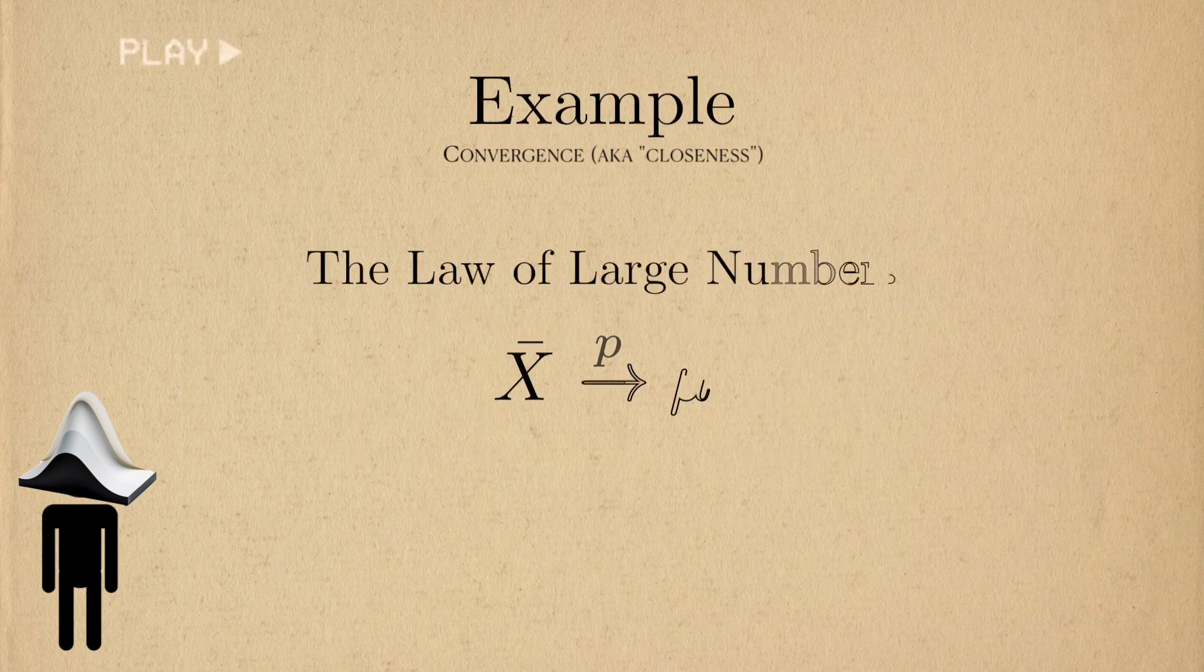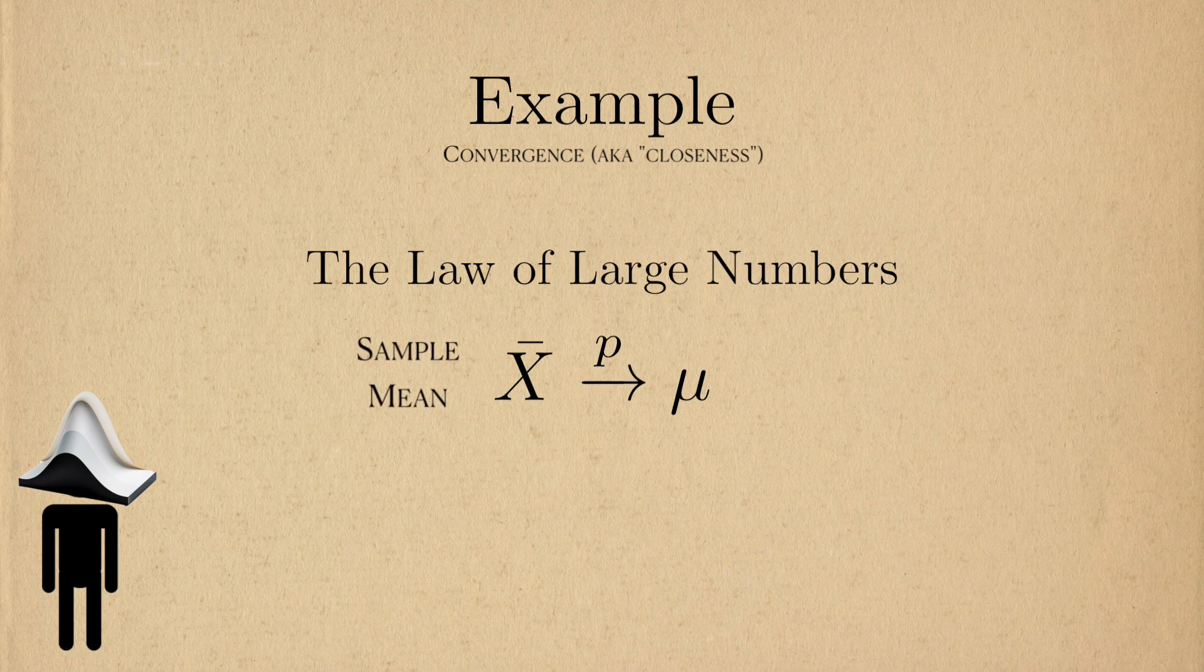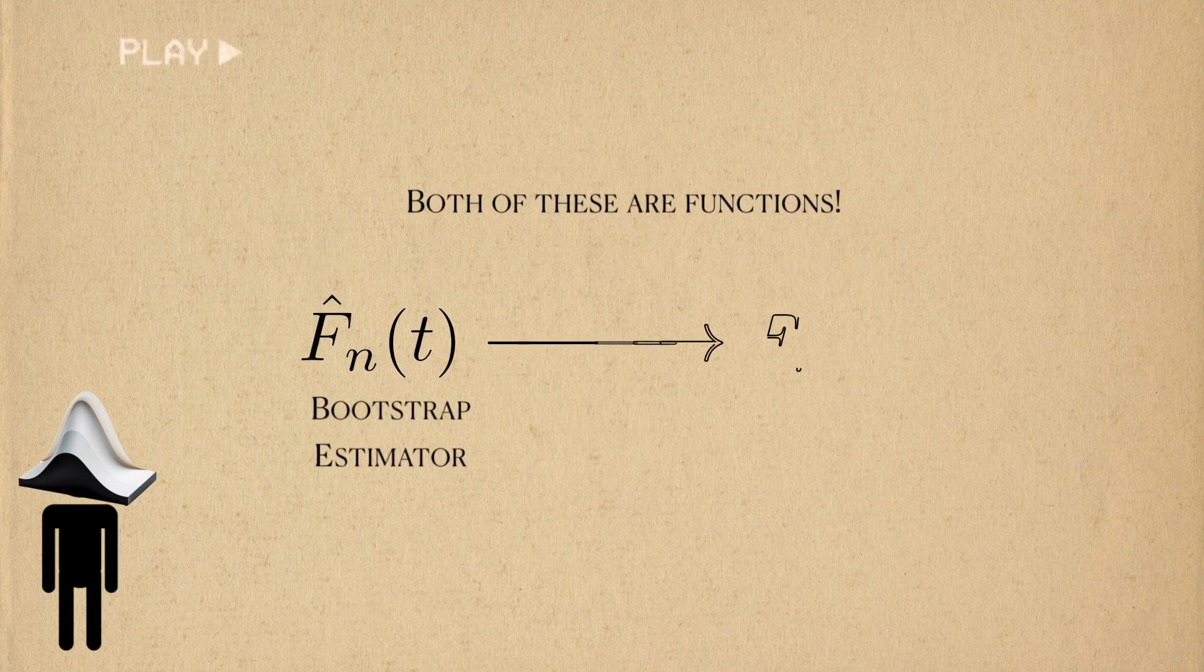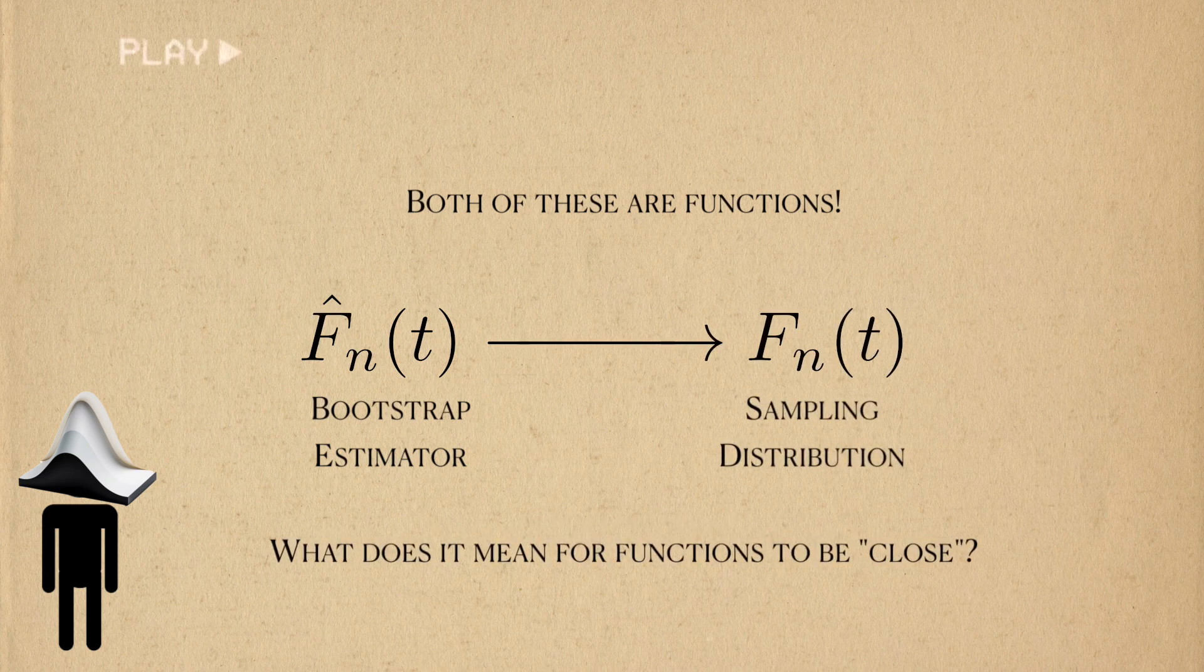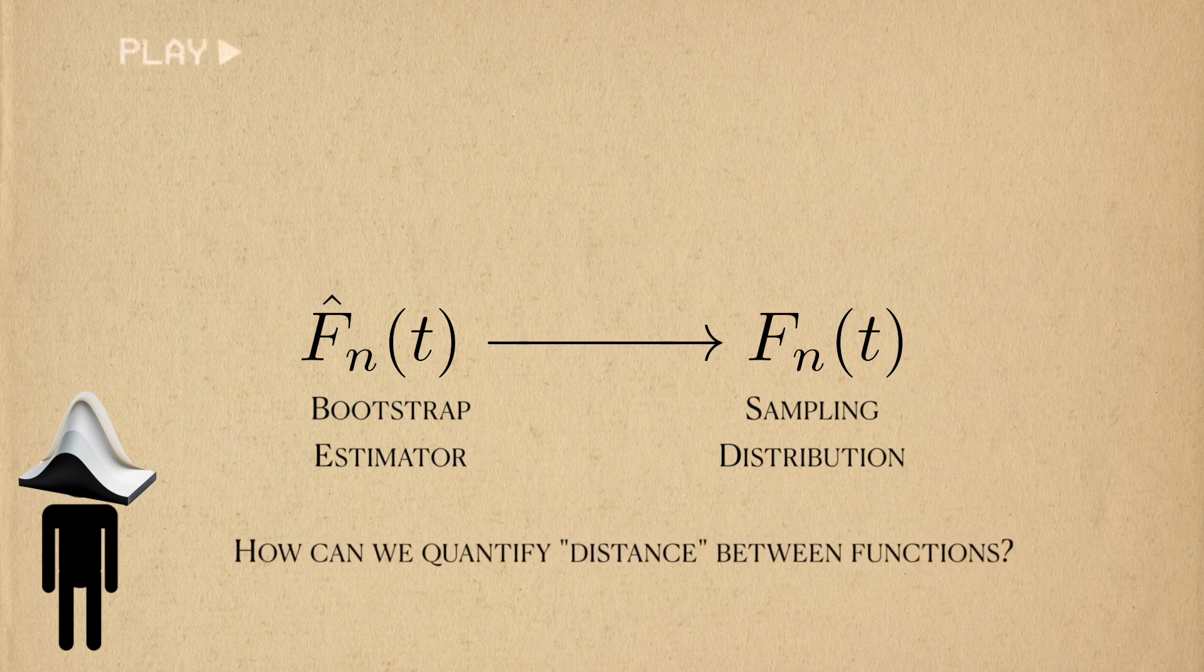Theorems like the law of large numbers say that point estimates like the sample mean will be approximately close to the population mean with enough data. But both of these things are functions. What does it mean mathematically for two functions to be close? That is, how do we quantify a distance between these two functions?